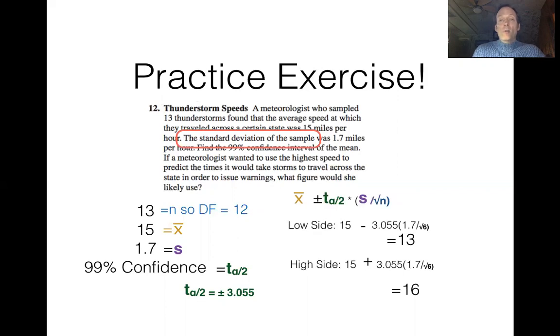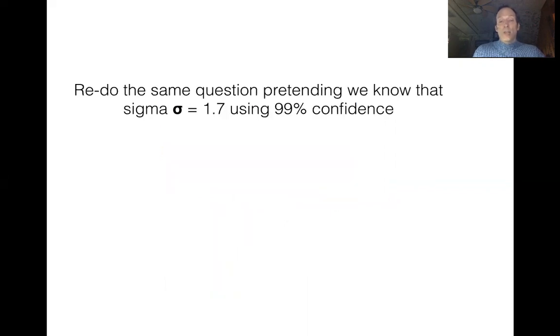Now what we're going to do is we're going to take the exact same question, but we're going to make one little difference in it. We're going to pretend that we actually know sigma, the population standard deviation, and we're going to set it equal to the exact same value, 1.7. So if we want to build the interval that way with the same level of confidence, that would bring us back to the z-distribution.